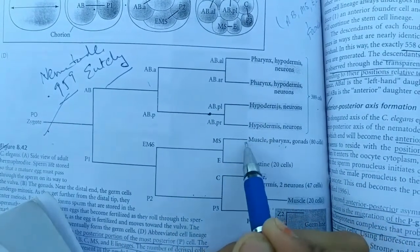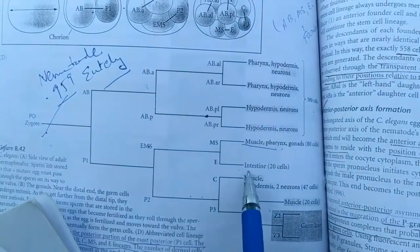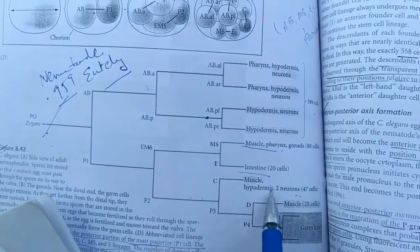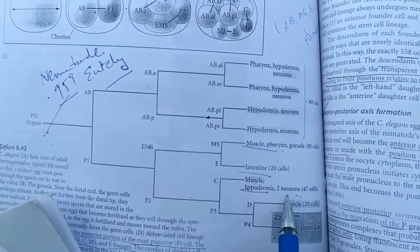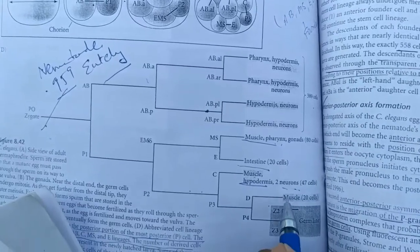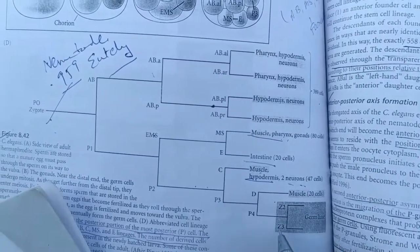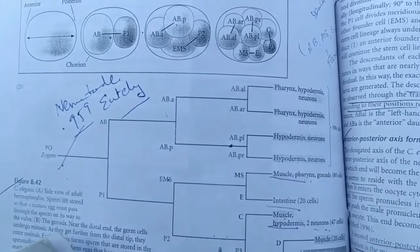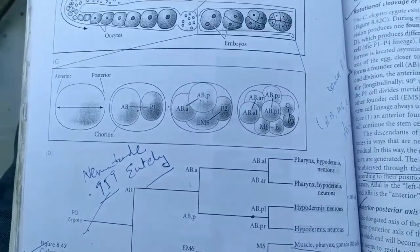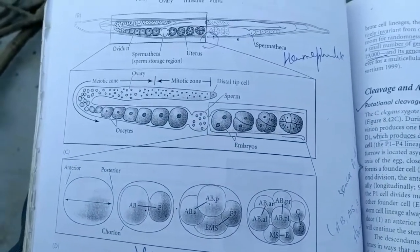389 cells will form these types of structures, 80 cells will form these structures, 20 cells will form intestine, 47 cells will form muscle, neuron, 20 will form muscle, and these are germline cells. I hope it is clear to you about the anatomy of C. elegans.